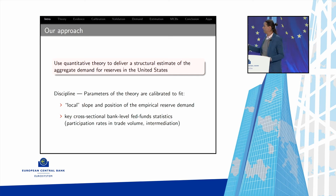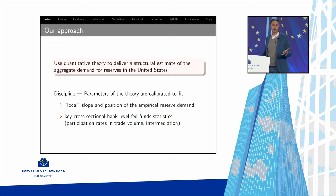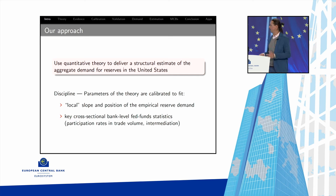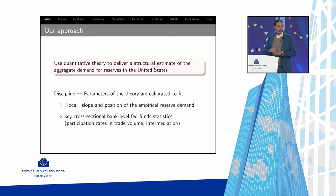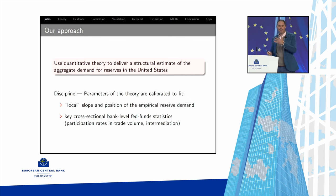We'll use a quantitative theory to deliver a structural estimate of the aggregate demand for reserves in the U.S., disciplined by making sure it's consistent with a wide array of cross-sectional moments: the distribution of reserves, distribution of trading activity, and distribution of interest rates traded between banks in the Fed funds market. After those validations, we use the model as a lab — fitting it to local information on demand in 2019, then using the power of theory to extrapolate. Econometrics only has data for very large levels of reserves, so whatever functional form you fit is your extrapolation; we discipline that extrapolation with the structure of the theory.